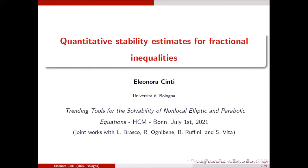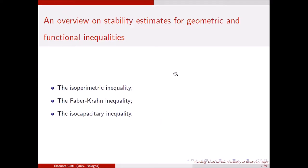To recall what these stability results are in the local setting for people who have never seen them before, I will focus mainly on three kinds of inequalities. The first one, very well known and classical, is the isoperimetric inequality. Then I will say some words on the Faber-Krahn inequality, and finally I will speak about the isocapacitary inequality.